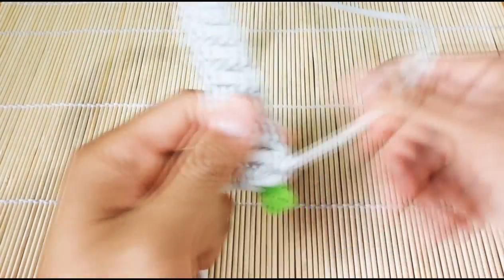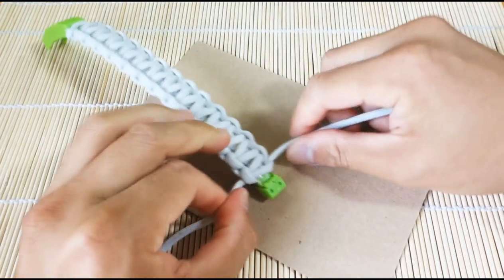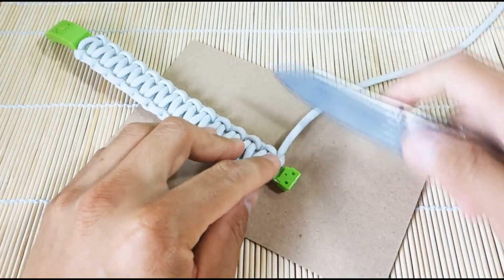So now we're just going to snip and singe, cut off the excess paracord using my trusty knife.